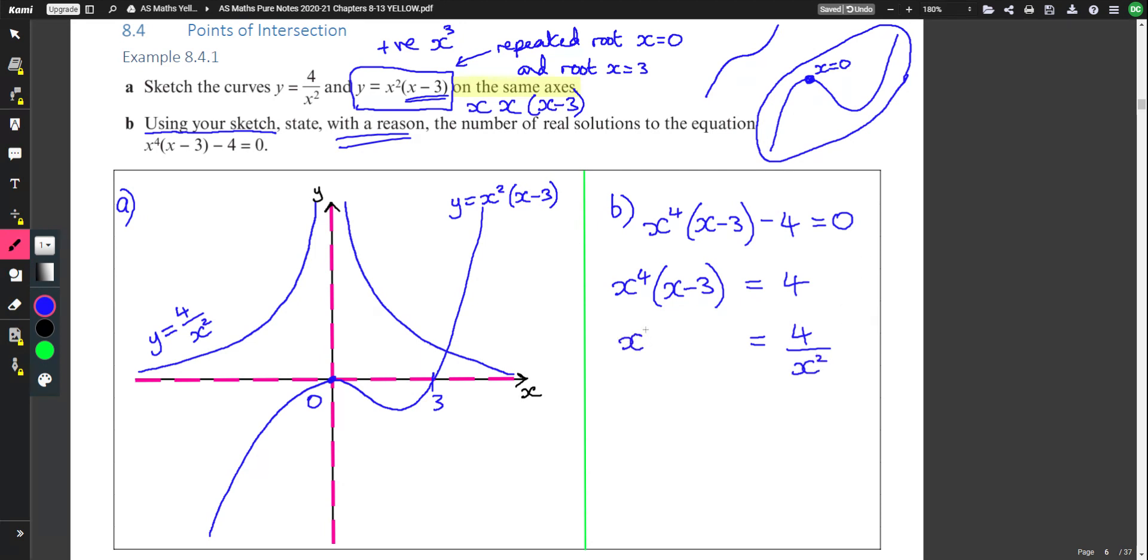And we notice the 4, one of the graphs is 4 over x squared. So now I'm thinking let's divide both sides of this equation by x squared. And when I do divide both sides by x squared, I notice we get the two equations, one on each side of this equation.